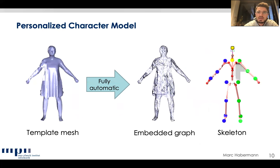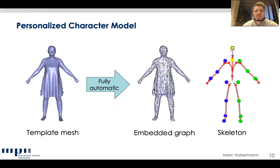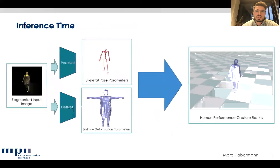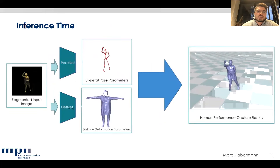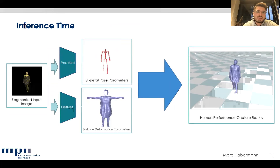To address this, we present DeepCap. Before explaining the algorithm, let me describe our assumptions. We assume we have a personalized 3D template mesh of the subject to be tracked. From this, we automatically obtain an embedded graph — a low-resolution version of the template mesh — and a rigged skeleton attached to the template mesh. At inference time, the method takes a single segmented RGB image; PoseNet estimates the skeleton pose, and DefNet estimates surface deformations in canonical pose.